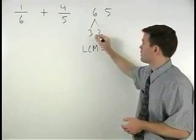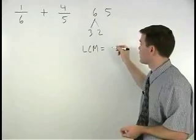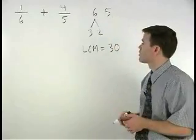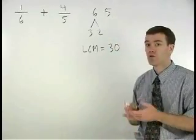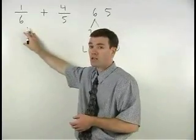is simply three times two times five, or six times five, which is thirty. So our least common denominator for these two fractions is thirty.